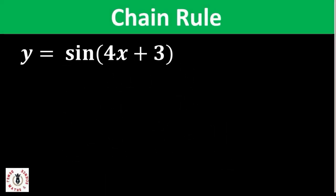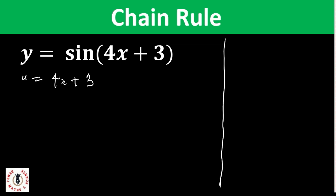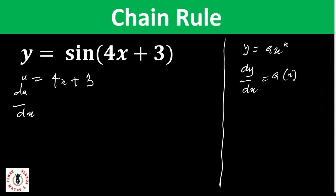Let's take some examples to help us understand this better. For our first example we have y = sin(4x + 3). I say let u = 4x + 3, so we need to find du/dx. Remember that if y = ax^n, then dy/dx = a·n·x^(n-1). So du/dx becomes 4·1·x^(1-1).